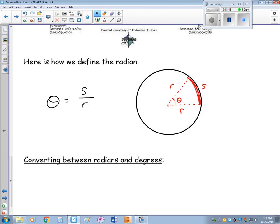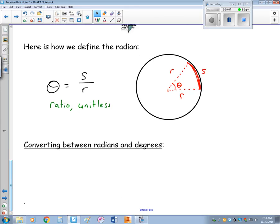When we look at this, we see that the radian then is a ratio, which makes it unitless. So, all radians are unitless. We're going to treat them as units, but understand that they are unitless.